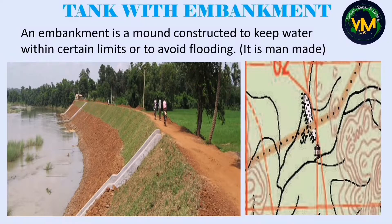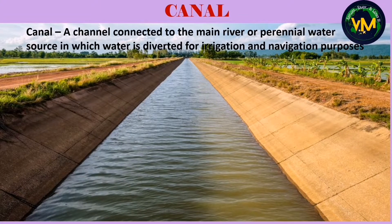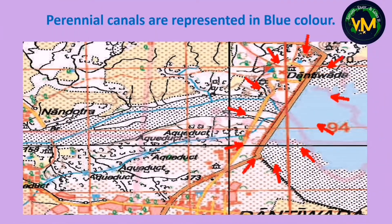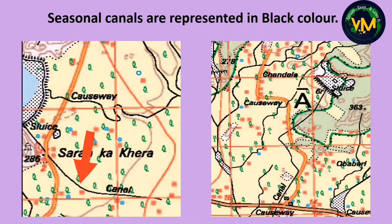Next we move on to canal irrigation. A canal is a channel of water taken from a main river or perennial water source in order to divert water for irrigation or navigation. In this topographical map you can see the Dantivada Dam, and from the dam you can see a blue color line — this is a perennial canal. Seasonal canals are black in color and have water only during the rainy season or when water is required for irrigation.